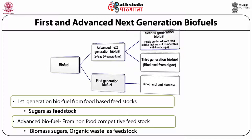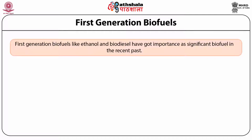Mostly, these are the biomass sugars and organic waste. In case of advanced next generation biofuels, based on the different forms of feedstocks, these are again sub-classified into second generation and third generation biofuels. Second generation biofuels are those produced from feedstocks that are not competitive with agricultural food crops. And third generation biofuels are those forms of energy like biodiesel produced from algae biomass. Past generation biofuels such as ethanol and biodiesel got significant importance as advantageous forms of biofuels in the recent past.